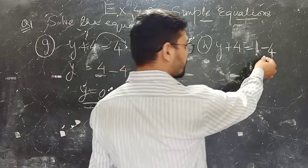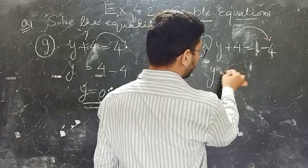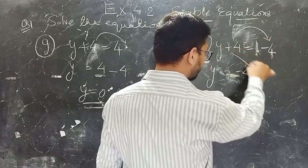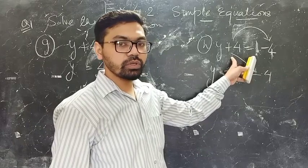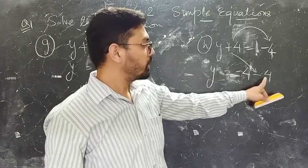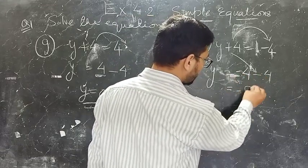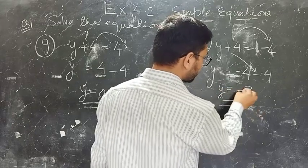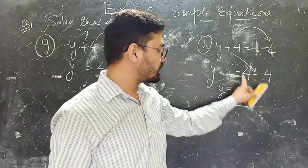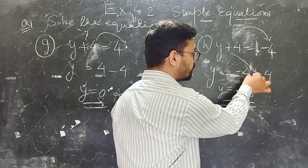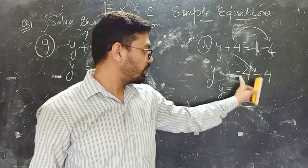Here it is minus 4 on the RHS. When you take this 4 from LHS to RHS, its sign changes from positive to negative, becoming minus 4. Earlier in the LHS it was plus 4, but after transposition it becomes minus 4. So minus 4 minus 4 equals minus 8. When you have two values with the same sign, you add them and keep the negative sign.